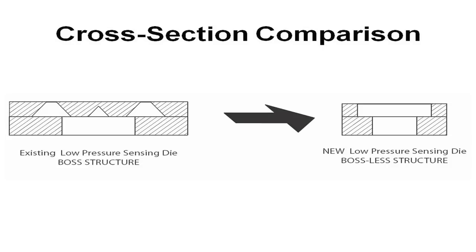Another benefit of the design is the ability to remove the boss structure that is traditionally used on low-pressure sensor die. This boss structure removal dramatically reduces position sensitivity by 90% over previous generation devices. This dramatically improves performance in portable applications and any application which has vibration as part of its environmental component.